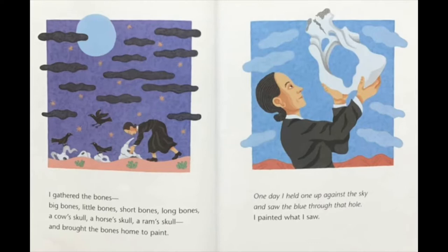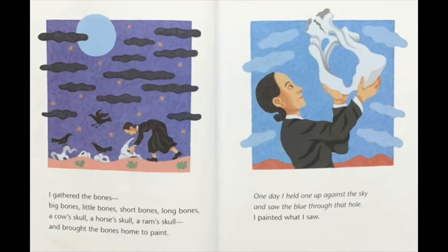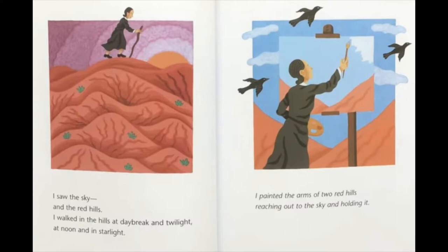'One day I held one up against the sky and saw the blue through that hole. I painted what I saw. I saw the sky, the red hills. I walked to the hills at daybreak and twilight, at noon and in the starlight. I painted the arms of two red hills, reaching out to the sky and holding it. I painted the paternal mountains in the far away. I painted it over and over and over again and then again and again.'